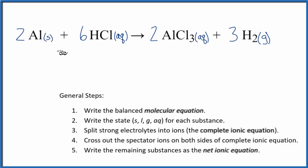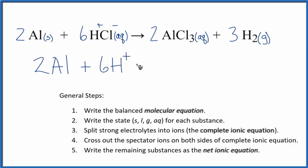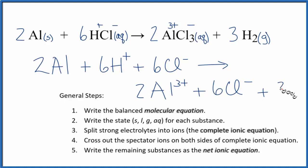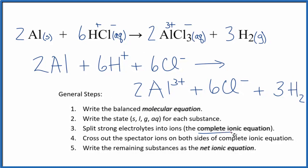Now we can split the strong electrolytes into their ions. Aluminum is not a strong electrolyte — it's a solid. Anything that's solid, liquid, or gas we don't split, so we just put 2 Al. Hydrogen is in group 1 on the periodic table with a 1+ charge, and chlorine is 1−, so we have H⁺ — six of those — and Cl⁻, six of those as well. For the products, aluminum has a 3+ charge, giving us 2 Al³⁺, plus Cl⁻ — six of those (3 × 2) — plus 3 H₂. This is the complete ionic equation, sometimes called the total ionic equation.